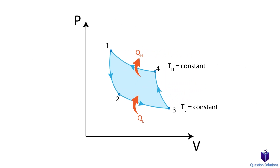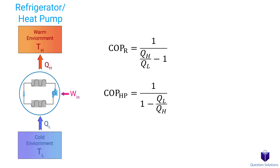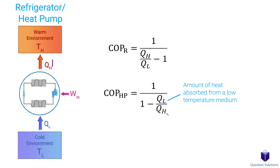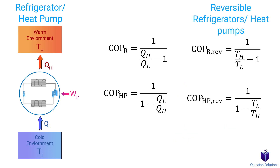From the refrigerators and heat pumps video, we learned about these two equations which allow us to find the coefficient of performance of any refrigerator or heat pump. These equations work for reversible or irreversible heat pumps. Here, QL is the amount of heat absorbed from a low temperature medium, and QH is the amount of heat rejected to a high temperature medium. When it comes to reversible refrigerators or heat pumps, we can use the temperatures of our low and high temperature reservoirs to calculate the COP values.